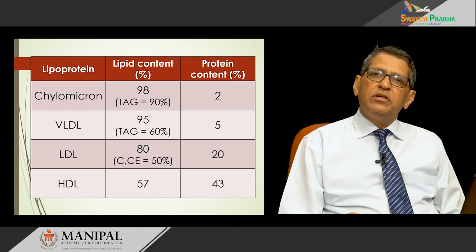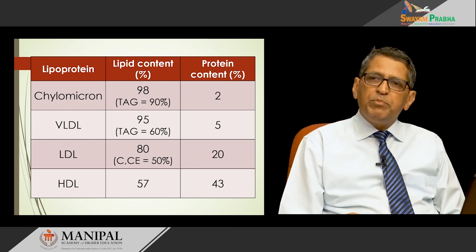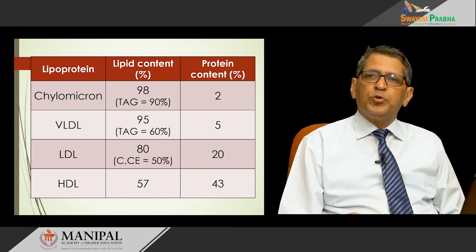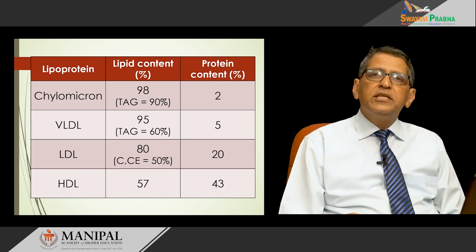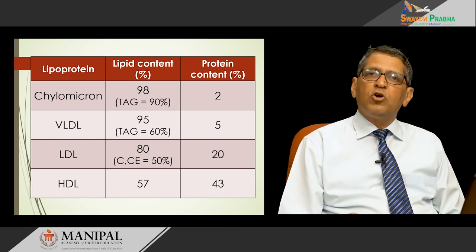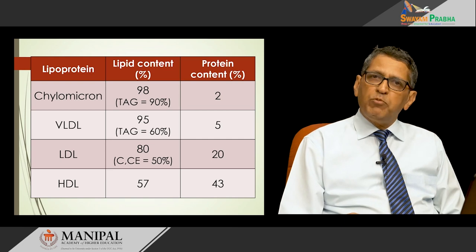LDL has 80% lipids and 20% proteins, and among the lipids, LDL is richest in cholesterol and cholesterol esters. HDL has almost equal amounts of lipids and proteins. To summarize: chylomicron has the highest amount of lipids and highest percentage of triacylglycerol; LDL has the highest cholesterol and cholesterol ester; HDL has the highest concentration of proteins.